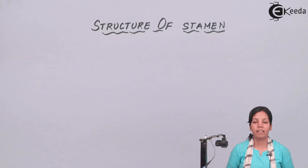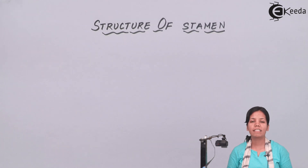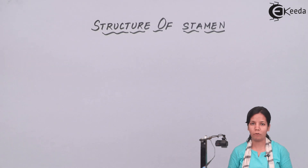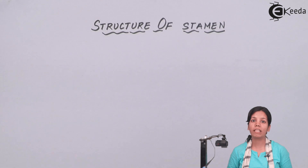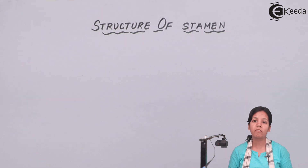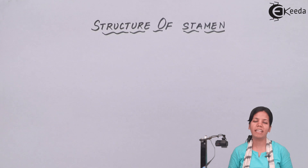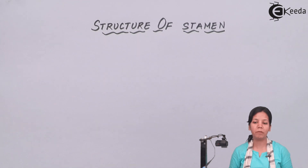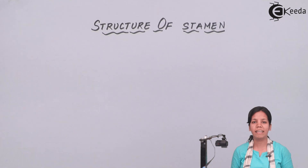Stamen is also called androecium or male gametophyte, and stamen along with gynoecium is very important for the process of fertilization or reproduction in plants. Stamen consists of three parts: filament, anther, and connective.